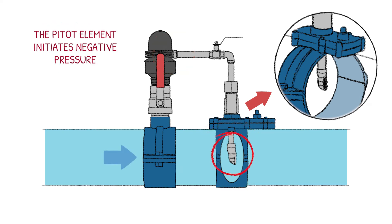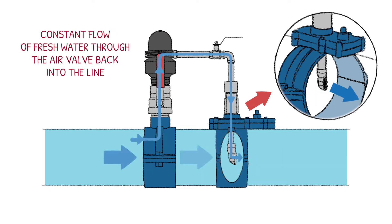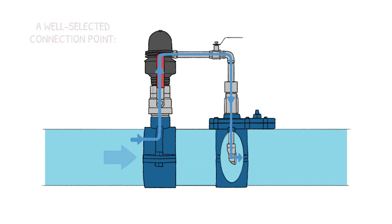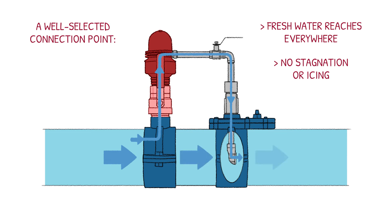The pitot element initiates negative pressure in its tubing, which creates a constant flow of fresh water through the air valve back into the line. A well-selected connection point on the air valve ensures that fresh water reaches everywhere, so there is no stagnation or icing anywhere inside of the air valve.